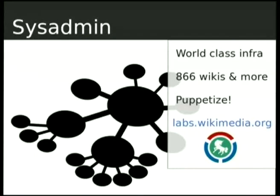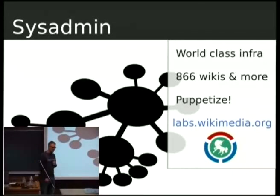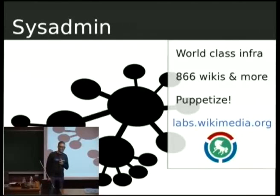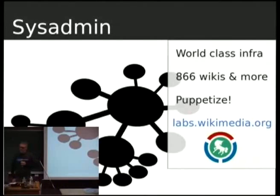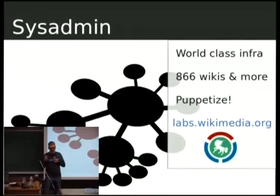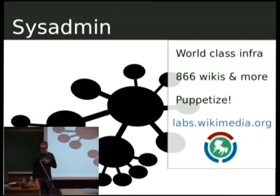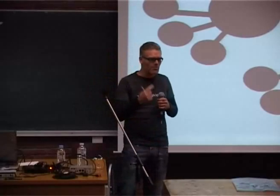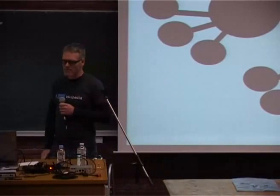System administration is another area with plenty of work and room for help. Wikipedia and company is the fifth most visited website in the world, with an amazing team — they are not many. When you think of Wikipedia, we are talking about — I checked two days ago — 866 wikis. And this is only the MediaWikis, which have configurations, extensions, tools like Bugzilla. There's plenty of things we are using around, and sysadmin help is also welcome. They are big fans of Puppet.